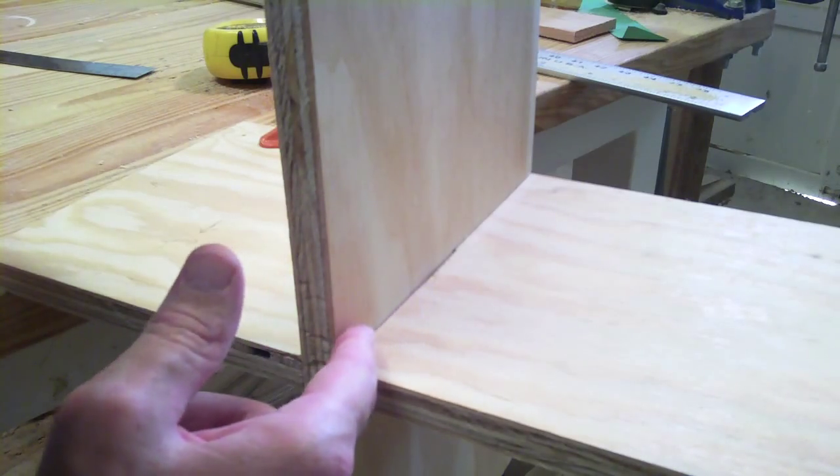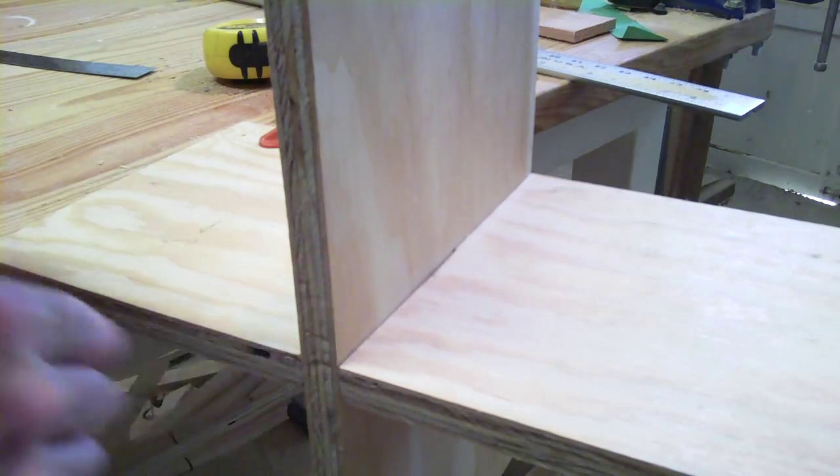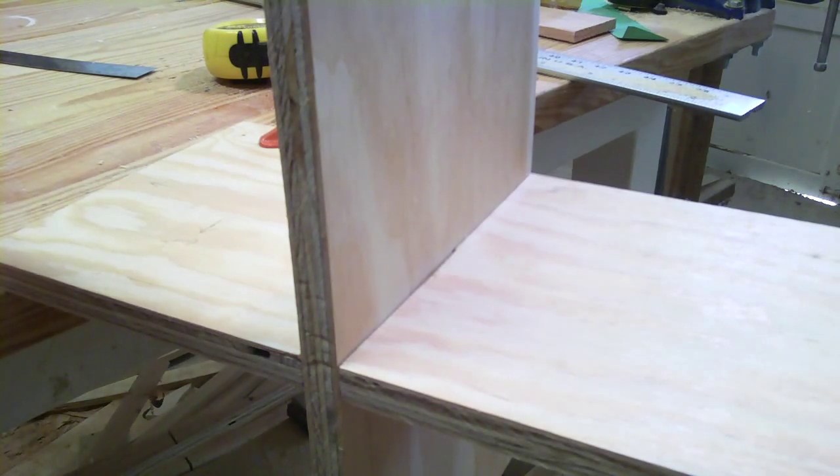After a little bit more sanding and a couple of jigsaw passes I finally got these two guys to meet up. They didn't want to be friends there for a while but I think everything's good now. So the next step is going to be to repeat the process on both of these bottom pieces and get these smaller shelves slotted in.